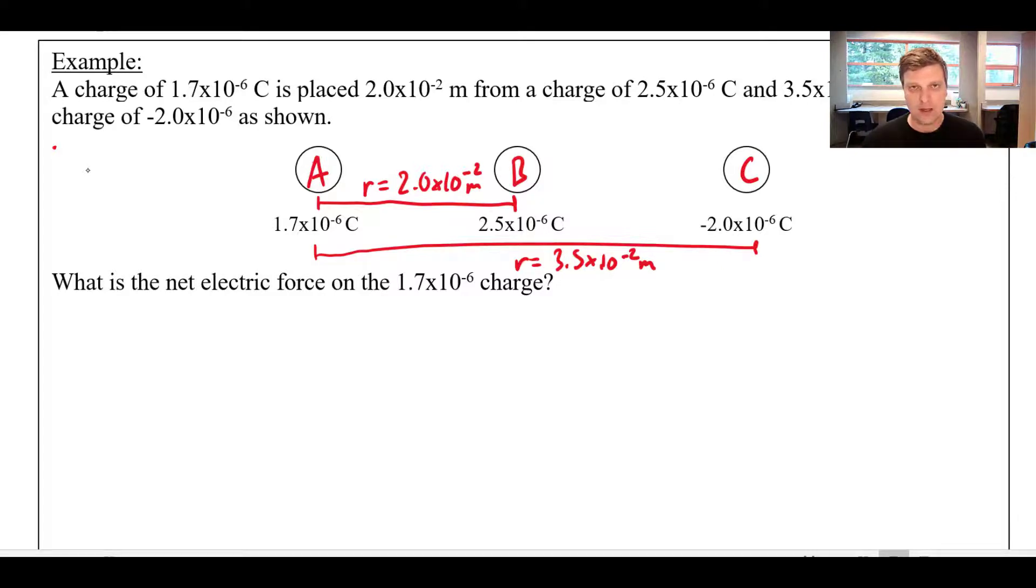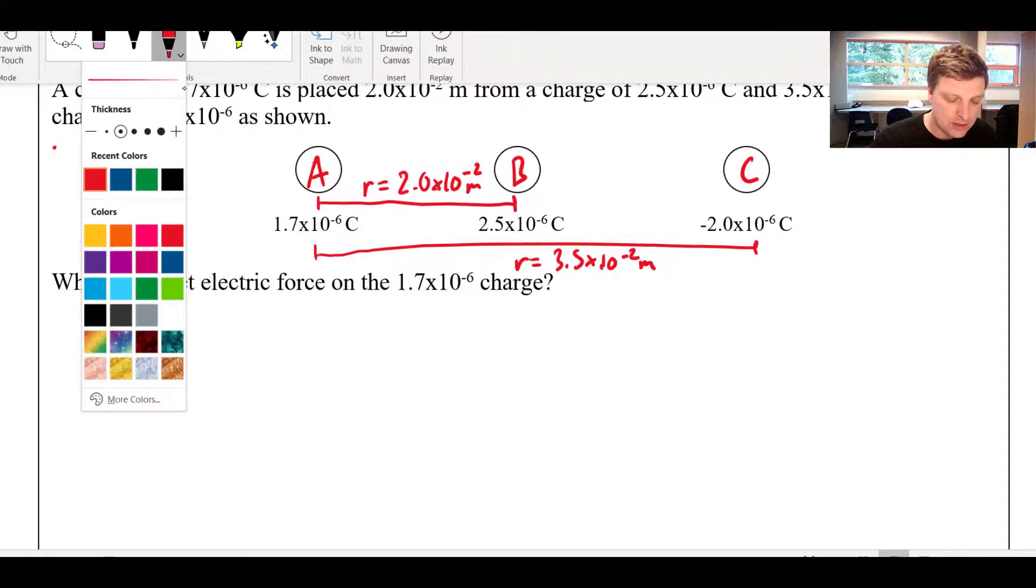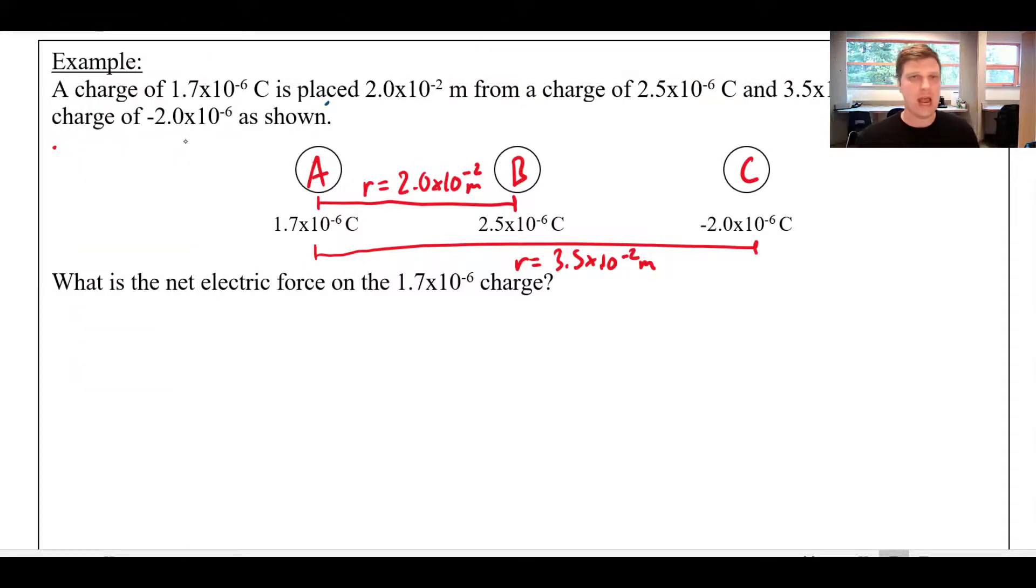This is a little bit confusing at first, but remember that we can find individual forces and then if we need to add them up, we can use vector addition. The first thing I would do is say, let's just ignore charge C. Just put your hand right over charge C and just ignore it for a second. Charge A and B are going to have an interaction. What kind of interaction are they going to have? Well, they're both positive charges, and positive charges are going to repel. So there would be a force here that pushes this charge this way. I'm going to call that FAB. And there would be another force over here, equal and opposite, also called FAB, pushing backwards on charge B.